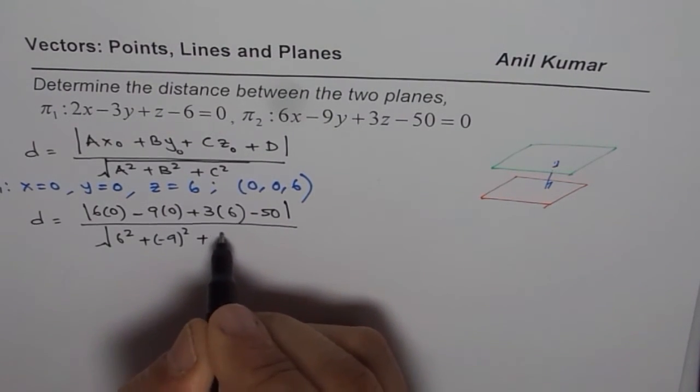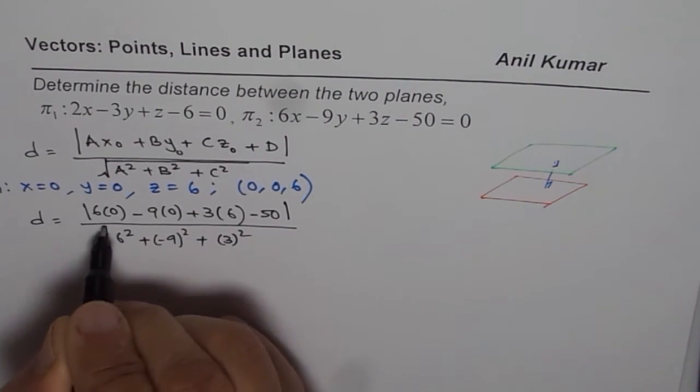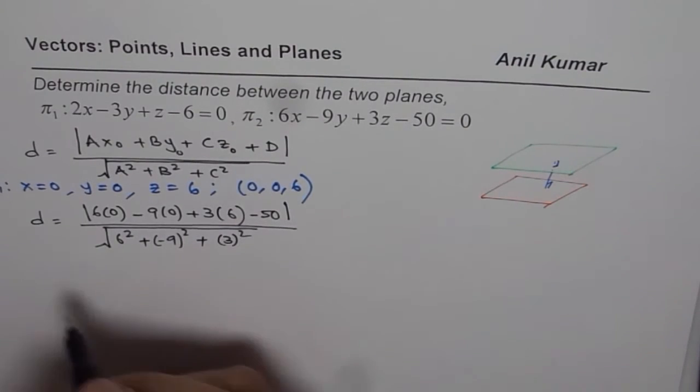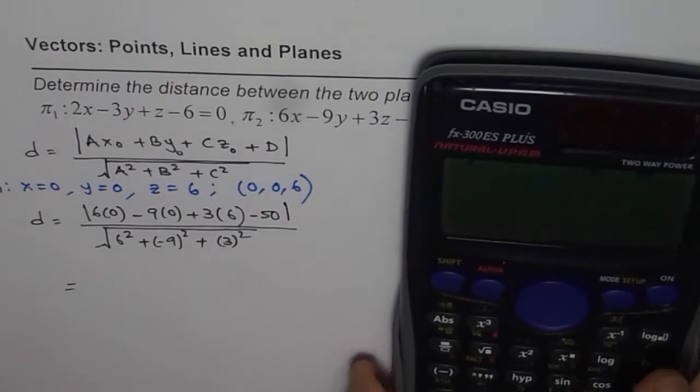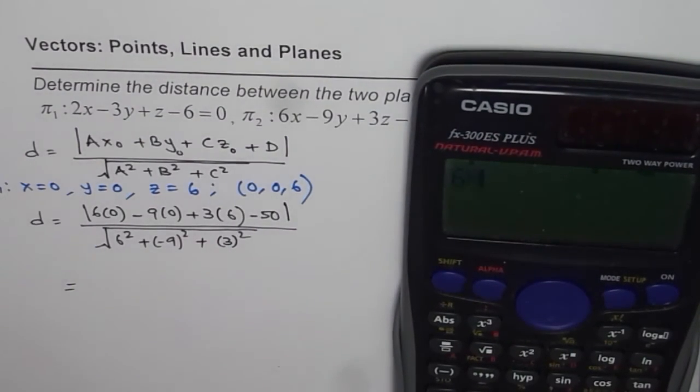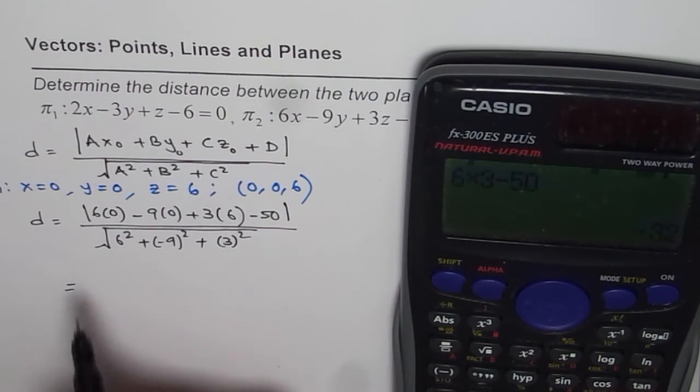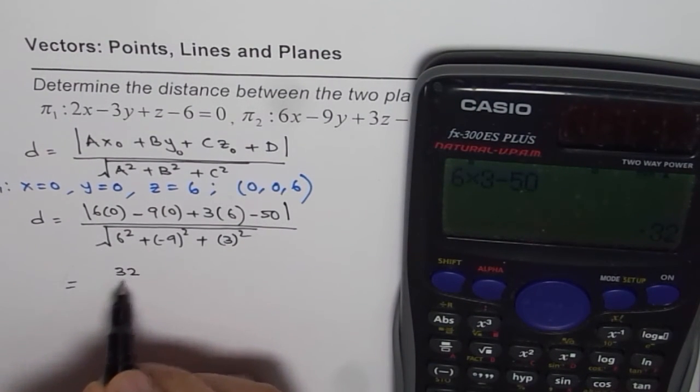Let's calculate. We have in the numerator we have 6 times 0 minus 9 times 0 plus 3 times 6 minus 50. That gives us -32. So we'll take absolute value of 32, always distances when you're considering positive values.